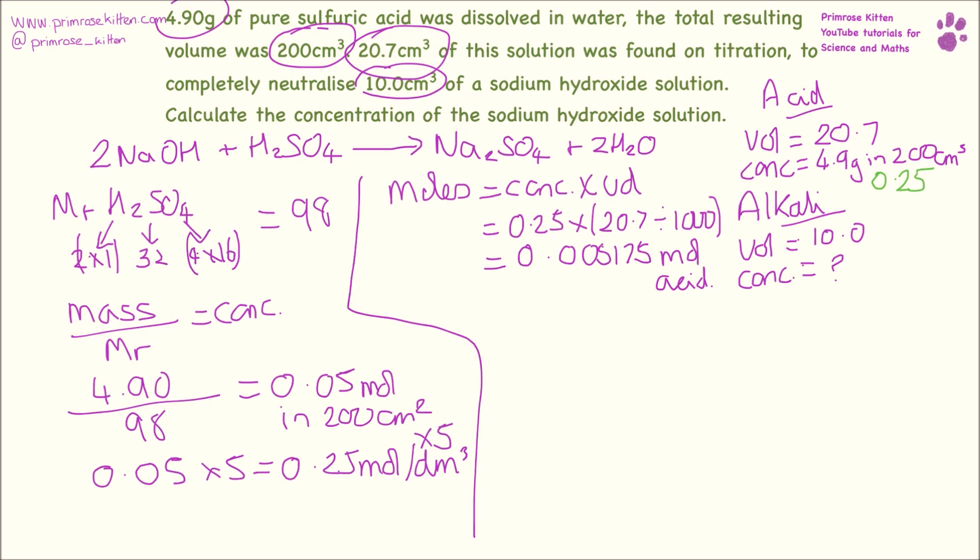Now if we have a look at our equation up here, you will see that we have 2 moles of alkali making 1 mole of acid. So our moles of acid are 0.005175. We need to times that by 2 to find the number of moles used. So times 2, that is going to give us 0.01035 moles of alkali.